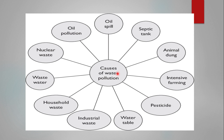Now we can list the causes of water pollution: septic tanks, animal junk, farming, pesticides, water table, industrial waste, household waste, wastewater, nuclear waste, oil pollution — many more points are there which you can add by yourself. But the major causes or steps we have discussed cover the main causes of water pollution.